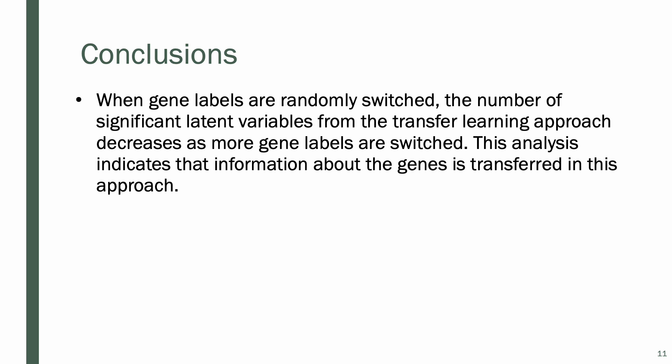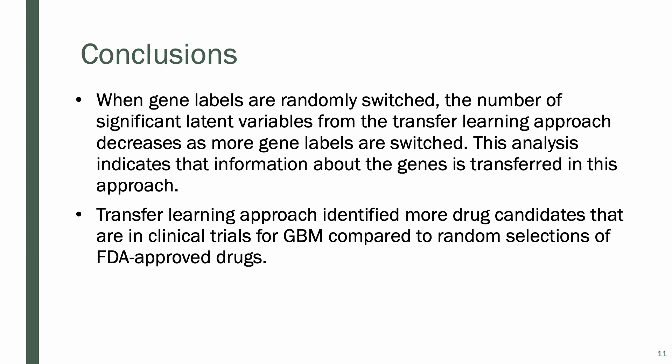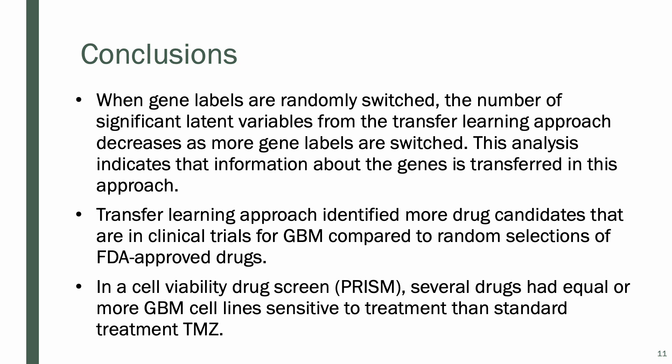In conclusion, when the gene labels were randomly switched, the number of latent variables from the transfer learning approach decreased as more gene labels were switched, indicating that information about the genes is transferred in this approach. In addition, the transfer learning approach identified more drug candidates that are in clinical trials for GBM compared to random selection of other FDA-approved drugs. Lastly, in the cell viability drug screen PRISM, several drugs had equal or greater GBM cell line sensitivity compared to the standard treatment temozolomide.